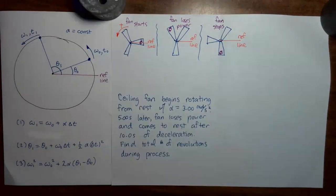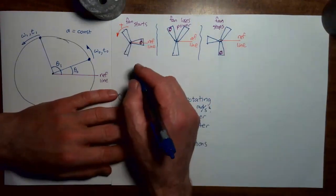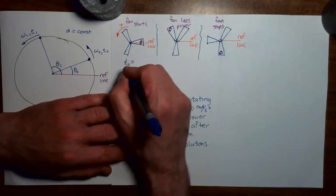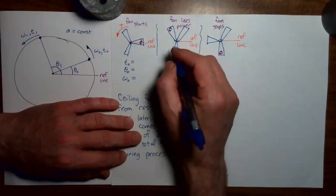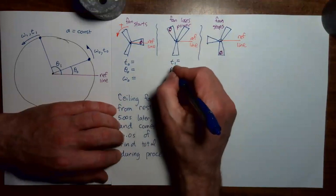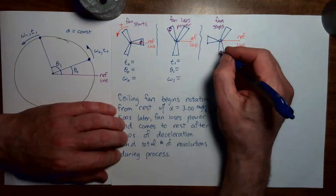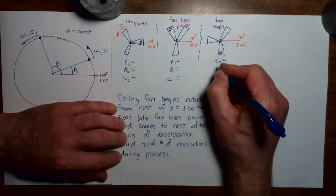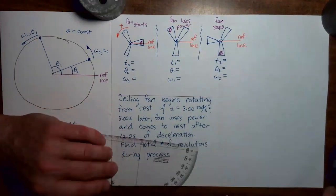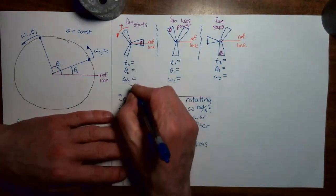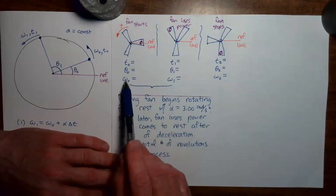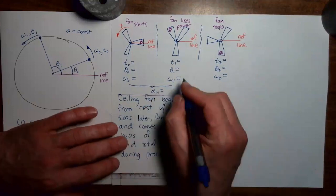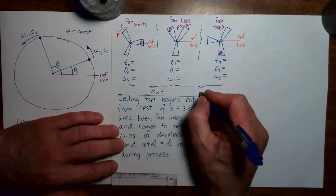Step three: at each moment of interest, write in the appropriate kinematic variables — time, angle, and angular velocity — then write the angular acceleration off to the side. This will look very much like what we did when solving kinematics problems with constant linear acceleration. At moment zero, we have time zero, angular position theta zero, and angular velocity omega zero. At moment one, we have time t1, theta one, and omega one. At moment two, we have time t2, theta two, and omega two. There are two angular accelerations: alpha zero-one from moment zero to one, and alpha one-two from moment one to two.